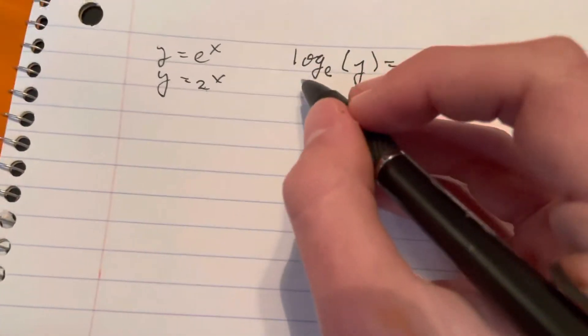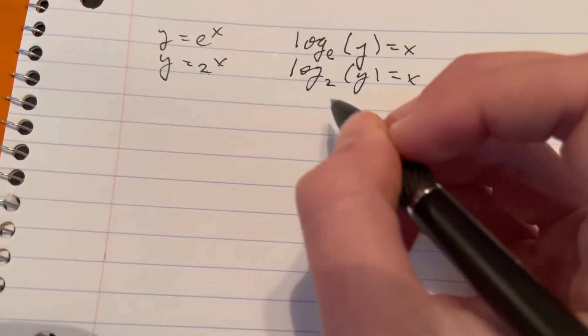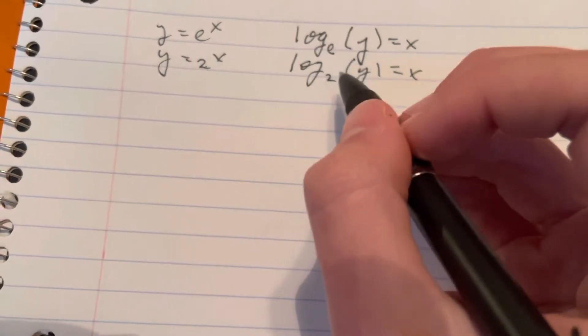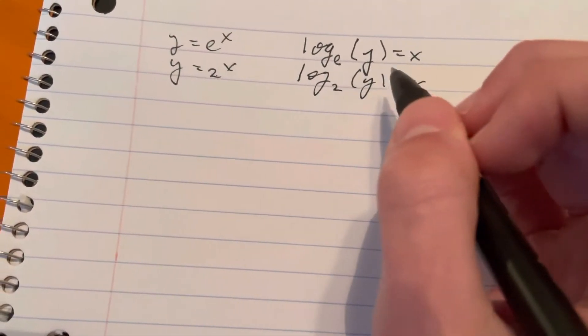The inverse of y equals 2 to the x would be log base 2 of y equals x. That's saying 2 to what power equals y, and in this case it's x. So 2 to the power x equals y.